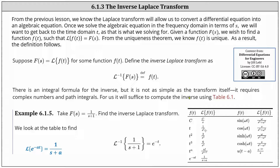As an example, we are given F(s) equals one divided by the quantity (s + 1), and we are asked to find the inverse Laplace transform. Looking at our table, we use the formula at the bottom of the first column, which I've enlarged here on the left: the Laplace transform of e^(−at) equals one divided by (s + a). In our case, a is equal to one, and therefore the inverse Laplace transform of 1/(s + 1) equals e^(−t).